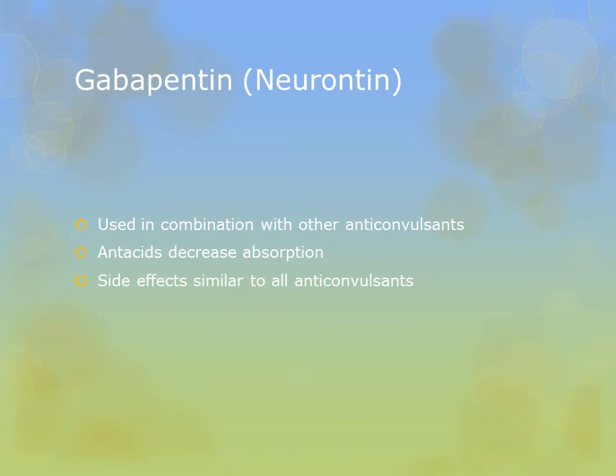Gabapentin is kind of miscellaneous and is typically only used in combination with other anticonvulsants. Its mechanism of action is unknown. It should not be taken with antacids — separate by two hours because antacids decrease the absorption of gabapentin and could cause breakthrough seizures even when the patient seems to be taking the medication appropriately.